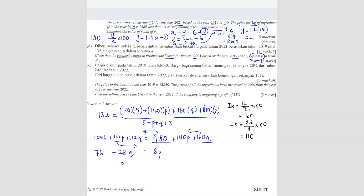Since I'm looking for P, I get P equals to 76 minus 28Q divided by 8, which simplifies to P equals 19 over 2 minus 7 over 2 Q.